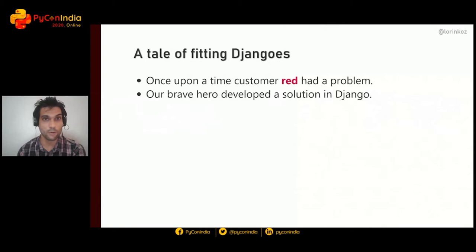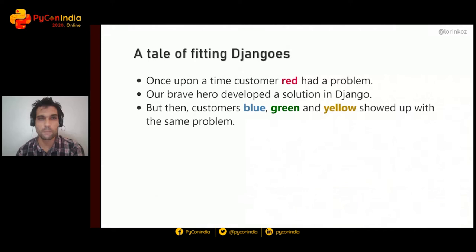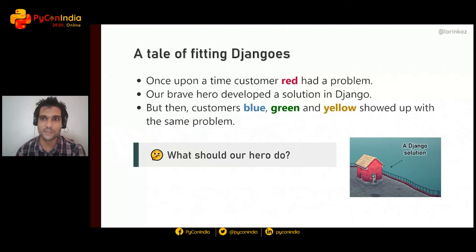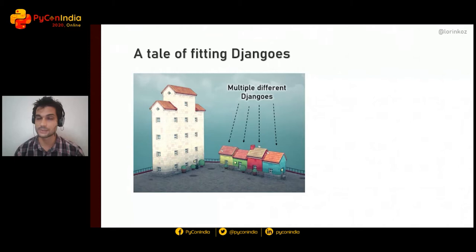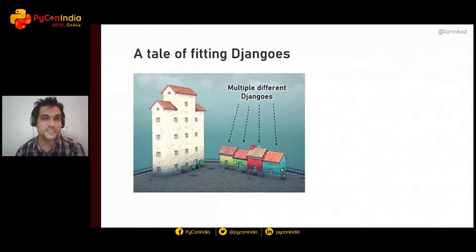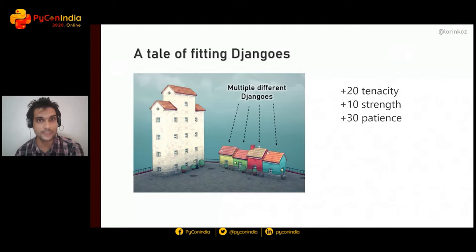Once upon a time, a customer Red had a problem and our brave hero developed a solution in Django. But then customers Blue, Green, and Jello showed up with exactly the same problem. The first option that comes to mind is to clone that Django solution into multiple different djangos — what I call multiple single-tenancy — but that becomes very difficult for a thousand customers.